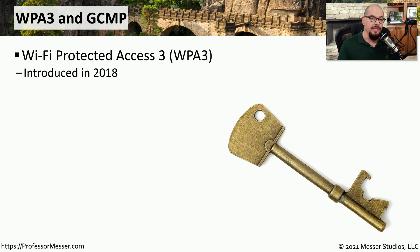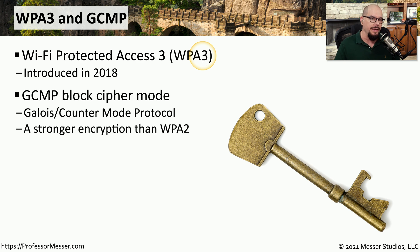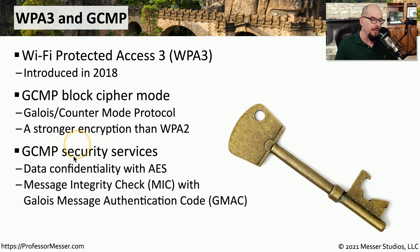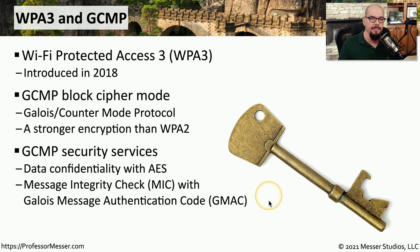In 2018, an updated version was introduced: Wi-Fi Protected Access 3, or WPA3. Instead of using CCMP, WPA3 uses GCMP — the Galois Counter Mode Protocol — which is considered a stronger encryption method than WPA2. This allows us to encrypt data using AES, and it includes a message integrity check using a Galois Message Authentication Code, or GMAC.